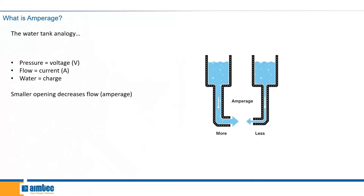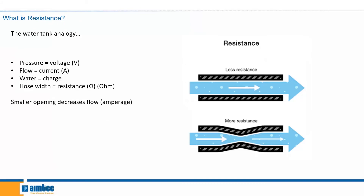Moving on to amperage, this will be represented by the amount of current that is passing through the hose. So a thicker or larger hose will have more current passing through it than a smaller hose. Finally, resistance, which is measured in ohms, can be represented by the width of the hose. The greater the width, the smaller the resistance, and the smaller the width, the more resistance you get. When you increase resistance, you decrease the amount of current that can pass through the hose, just like we saw looking at the diameter of the hose and the amount of current that can flow through it.